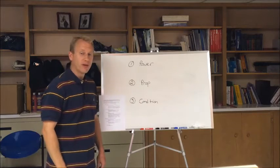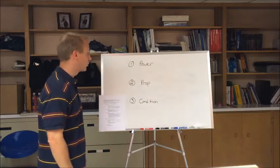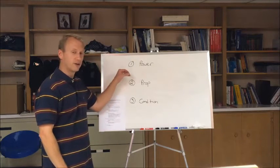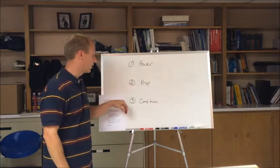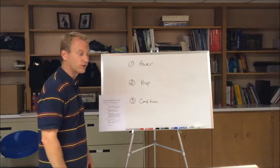The power plant is operated by three sets of controls: the power lever, prop lever, and condition lever, which are all located in the power quadrant.